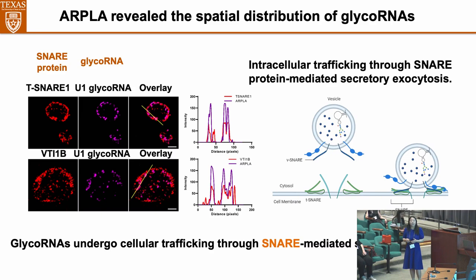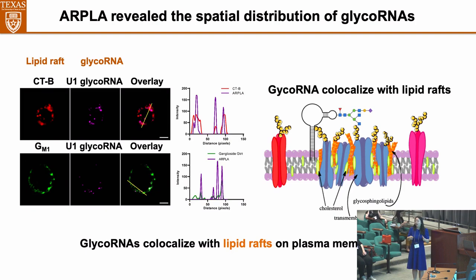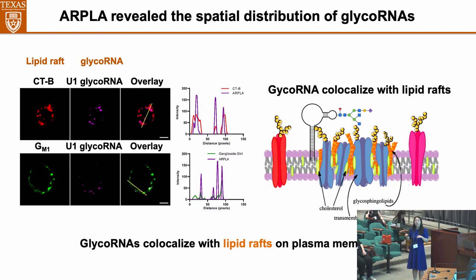After knowing that glycoRNA can reach the cell surface, we were still interested in where its final location is. Since glycoproteins and glycolipids mostly aggregate on a domain called the lipid raft, we hypothesized that glycoRNA may also localize there. We used a lipid raft marker — CTB and ganglioside — to stain the lipid raft, and also used RPLA to stain the glycoRNA. We found that glycoRNA co-localizes with the lipid raft on the cell membrane — the first time we observed the final distribution of glycoRNA on the cell surface.